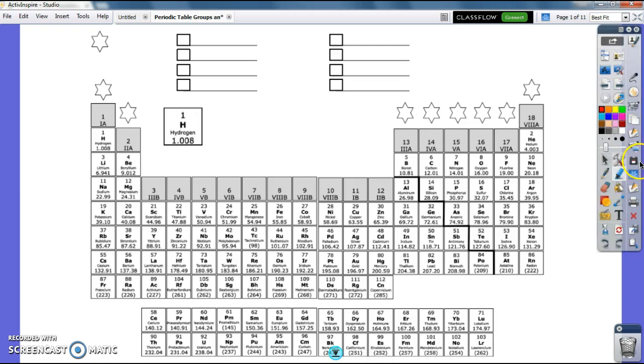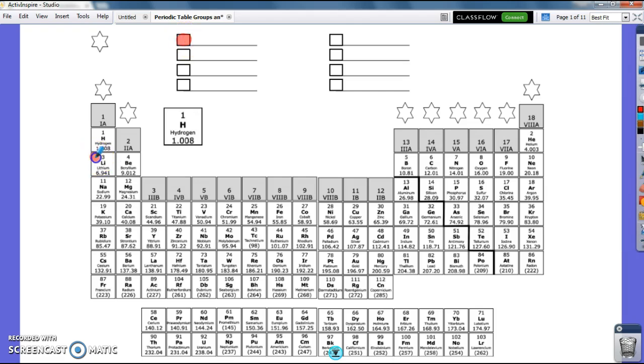We're going to go ahead and color through our periodic table. So the first group we're going to color, I want you to color them in a little bit lighter so you can still read through it. I've got a red color on this one. We're going to color the first group, but not hydrogen, because hydrogen is a little bit different.